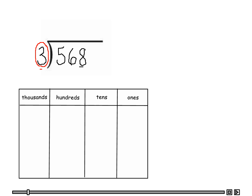We're going to start by looking at the ones place. We have eight in the ones place, so we need to place eight disks here: one, two, three, four, five, six, seven, eight. Notice I have it set up in groups of three. Here's one group of three, and here's the second group of three with two left over.